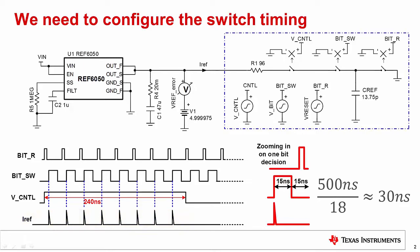The bit switch timing is set by the ADC conversion timing. The conversion period is 500 nanoseconds from the ADC datasheet. The ADS8881 is an 18-bit converter, so the conversion time is broken into 18 different clocks, or 30 nanoseconds per clock. Thus, the bit switch timing is set to 30 nanoseconds. The control switch allows eight bit conversion clock pulses to pass and is set high for eight conversion clock periods, or 240 nanoseconds.